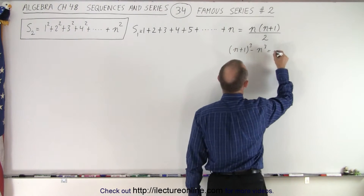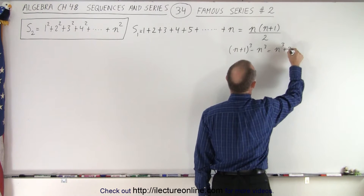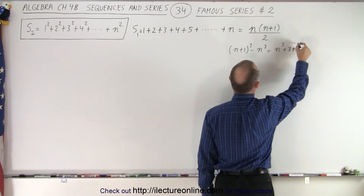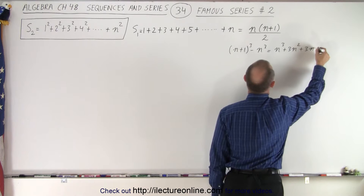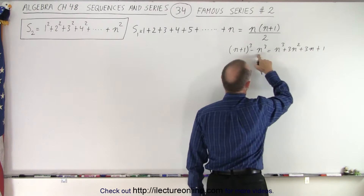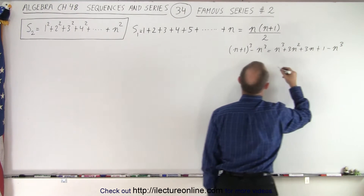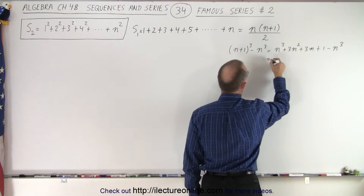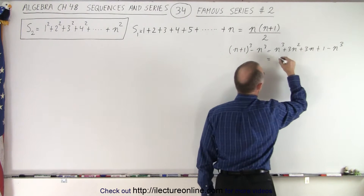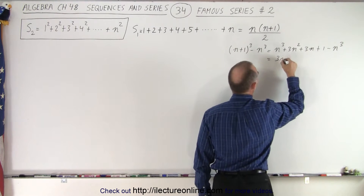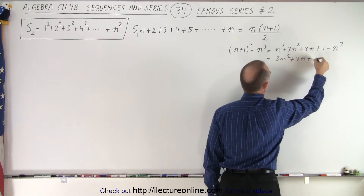This is equal to n cubed plus 3n squared plus 3n plus 1, and then we subtract minus n cubed. So the n cubed terms cancel, and we end up with 3n squared plus 3n plus 1.